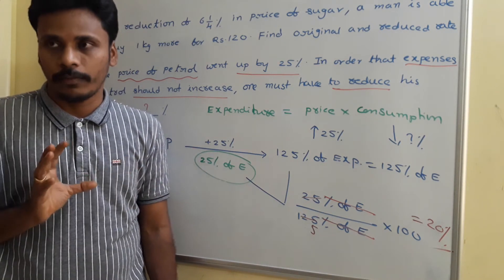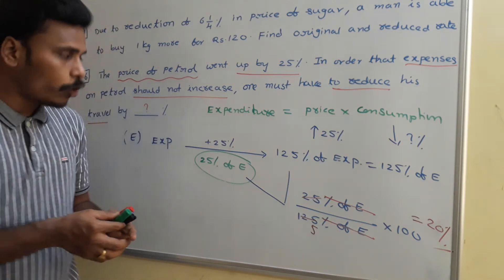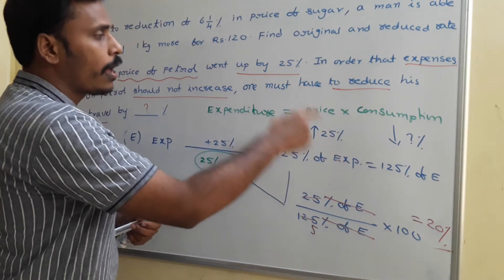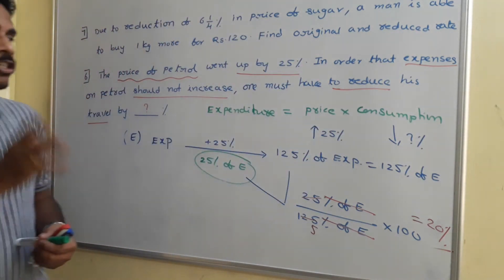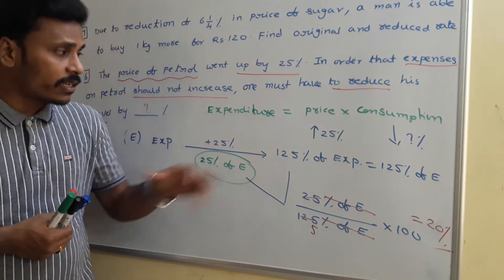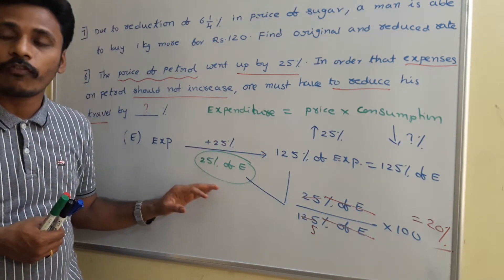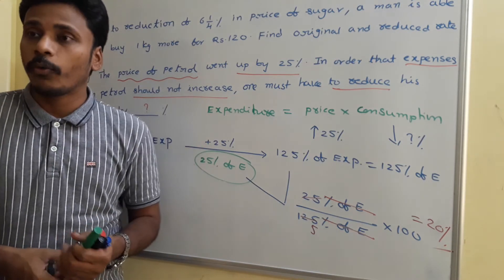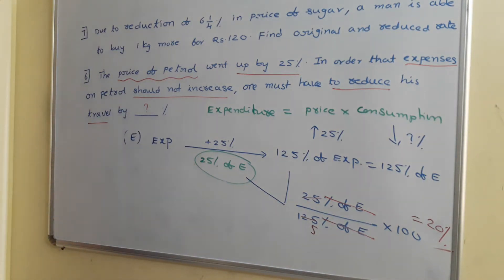If you need the traditional way — not the logical way — the formula is: expenditure equals price into consumption. Price is increased by 25% and consumption is to be reduced by some question mark percent. This is one very simple and smart way of solving this problem. If you are searching for the traditional way, I will give you another solution. First go for a screenshot of this, and then I will give the next one.